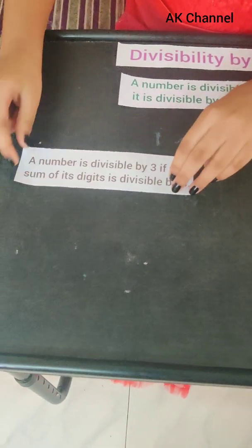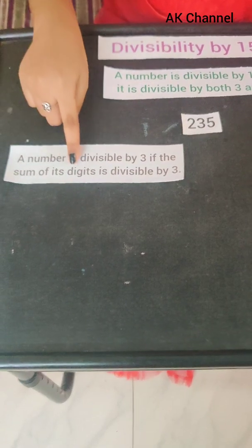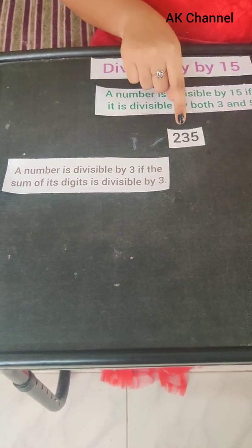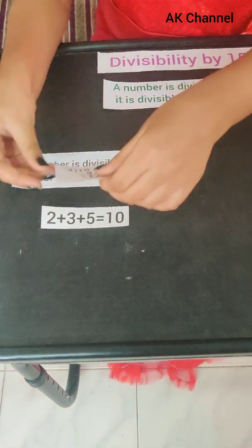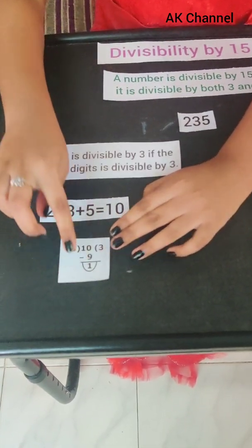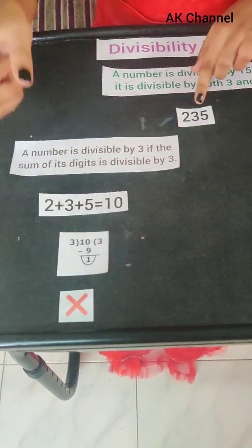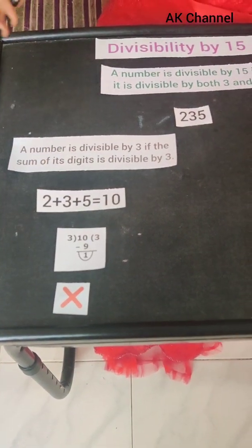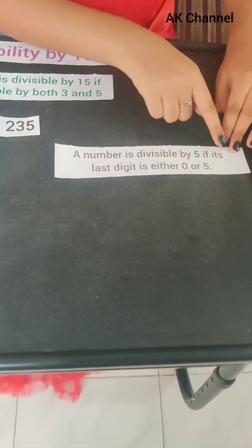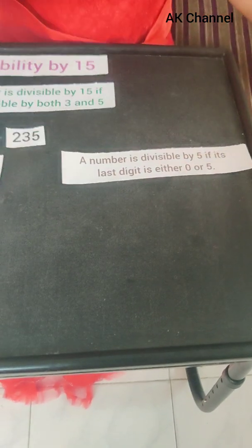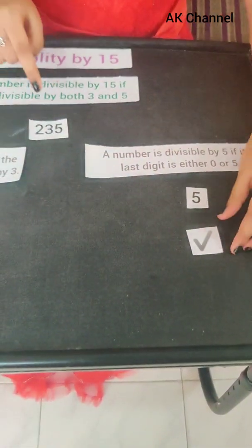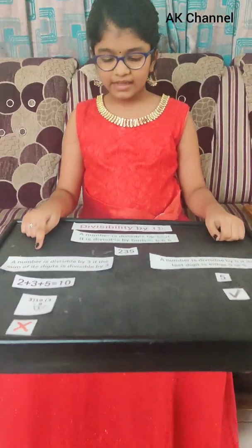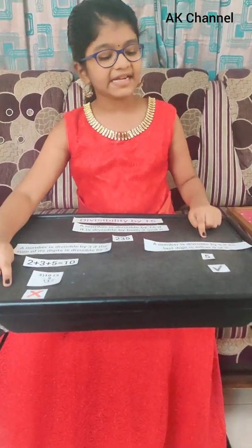First, let us check with 3. A number is divisible by 3 if the sum of each digit is divisible by 3. The sum of digits of 235 is 2 plus 3 plus 5 is equal to 10. 10 divided by 3 gives us a remainder 1, so 235 is not divisible by 3. Divisibility rule of 5: a number is divisible by 5 if its last digit is either 0 or 5. 235's last digit is 5, so 235 is divisible by 5. Since 235 is not divisible by 3, 235 is not divisible by 15.